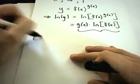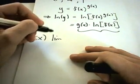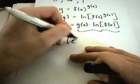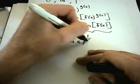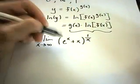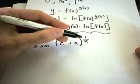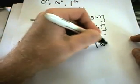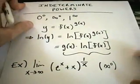Let's find an example — we'll do two of these. Suppose I have the limit as x goes to infinity of (eˣ + x) raised to the 1/x power. Well, eˣ is going to go to infinity, x is going to infinity, and 1 over infinity is 0. So we're getting the form infinity raised to the 0, which is one of our indeterminate powers.